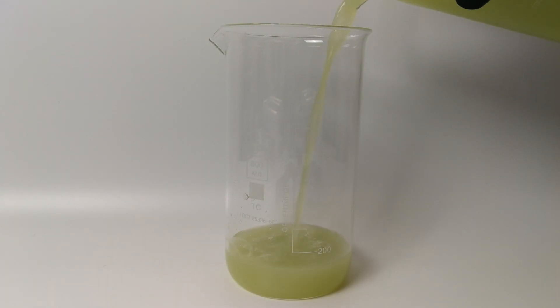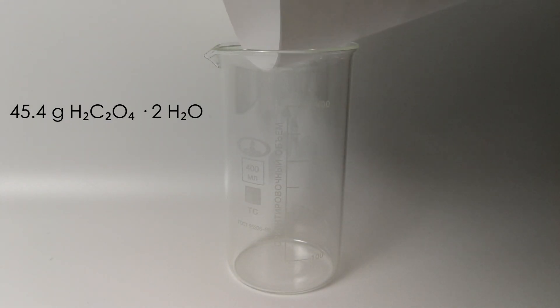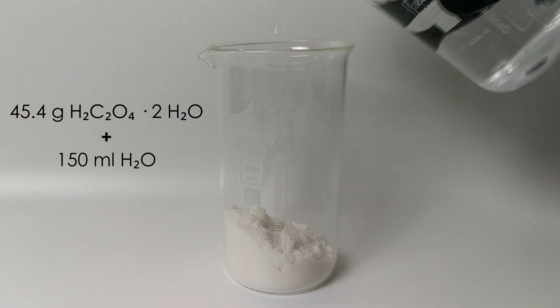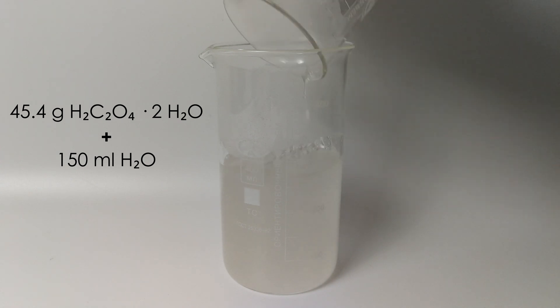The second beaker turned out to be too small, so I washed the first one and transferred the solution back into it. Next, we add 45.4 grams of oxalic acid dihydrate to a separate beaker and dissolve it in 150 milliliters of hot water.